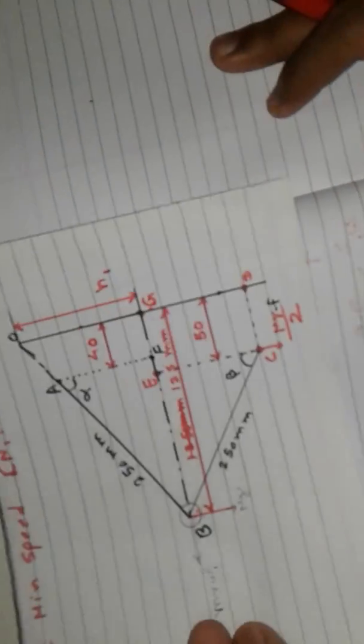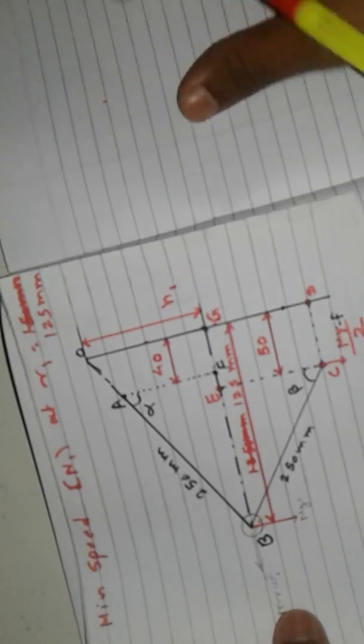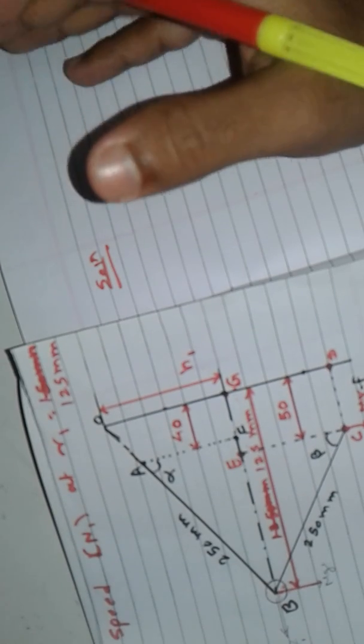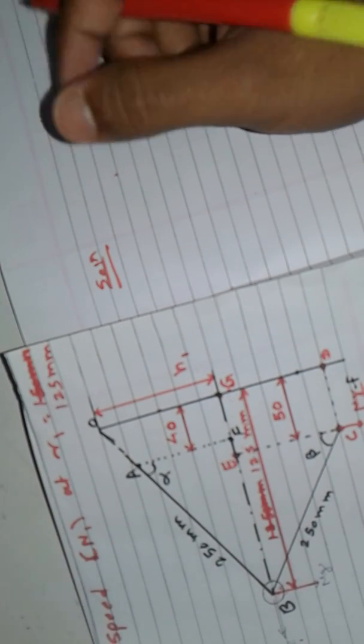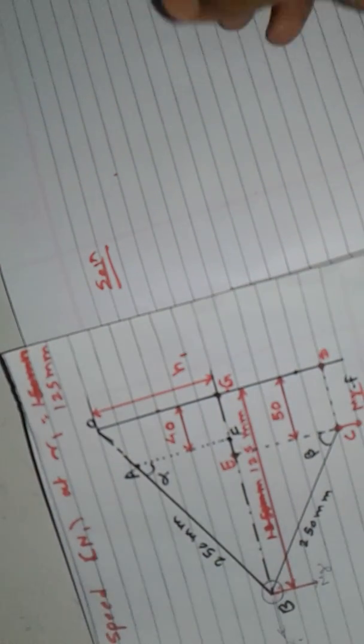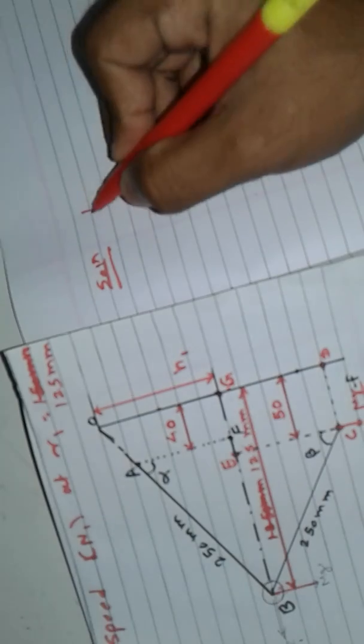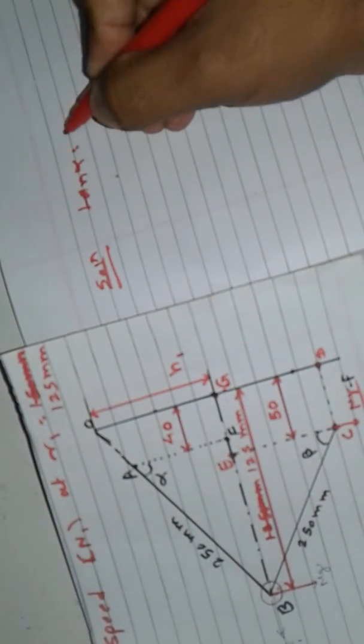Now let's start the solution. In the previous video we used the Pythagoras theorem to find h1, but in this numerical we cannot use it. So another method is: tan alpha = R / h1.